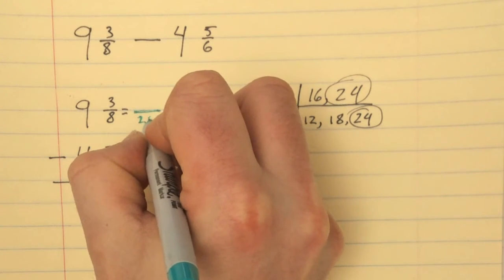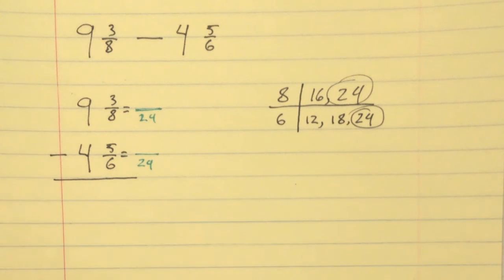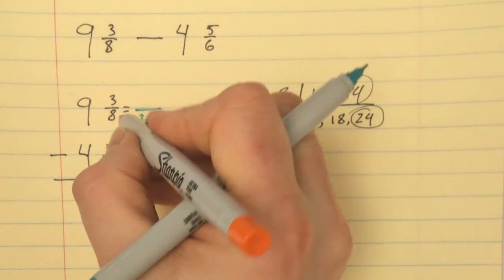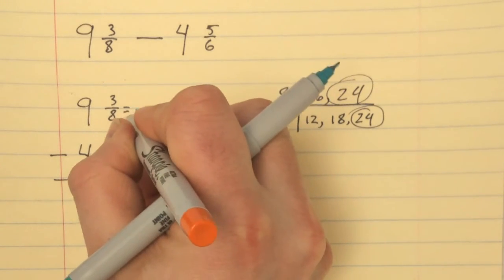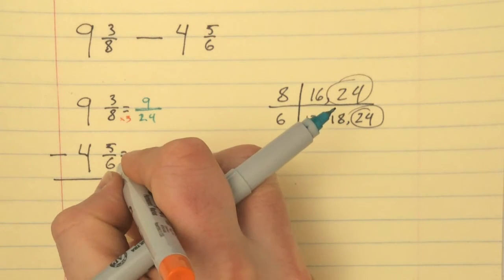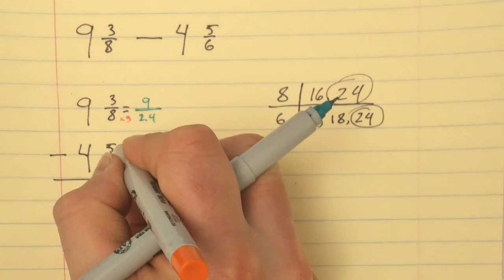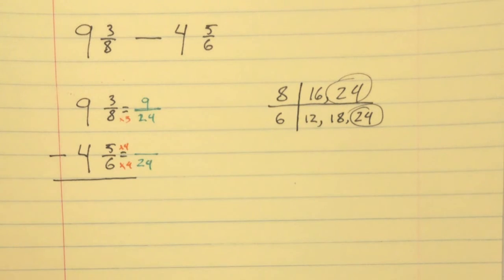Eight times three, so three times three is nine. Six times four, so five times four is twenty.